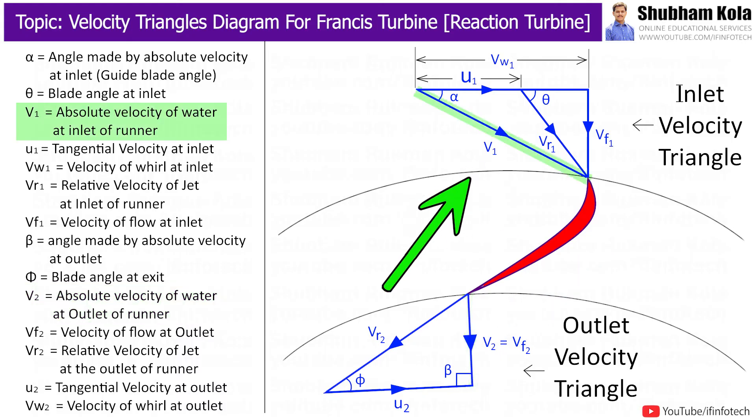Because suppose this inclined line, V1, completely vertical at outlet, then horizontal part Vw2 will be zero. That means V2 and Vf2 lines are same at outlet. Therefore, V2 is equal to Vf2 and Vw2 is zero.